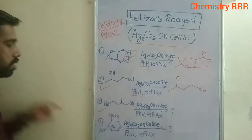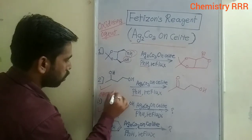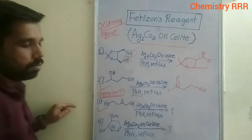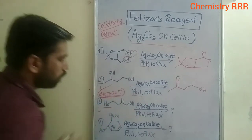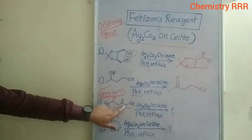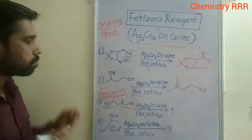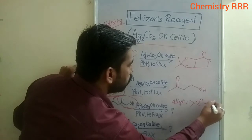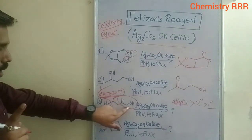Now let's discuss example number three. This is a very important example, as it was asked in GATE 2017. The conditions are the same: silver carbonate on Celite, benzene as solvent, and reflux conditions. In this case we have two types of alcohol — an allylic alcohol and a primary alcohol. The order of reactivity is: allylic alcohol is oxidized first, then secondary, then primary. So obviously the allylic alcohol is oxidized first.